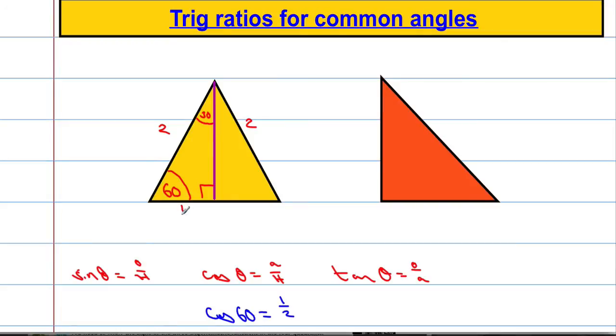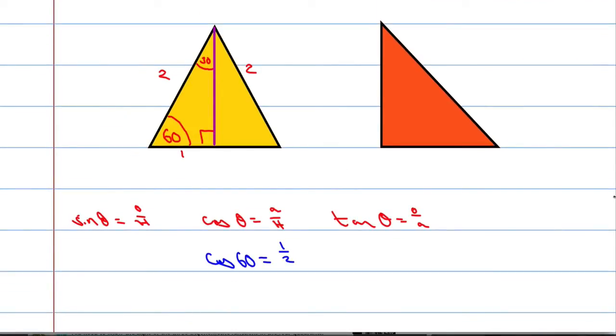I can also write down actually the length of this purple line here by using Pythagoras' theorem. This is the hypotenuse. This is one of the short sides. And using Pythagoras, let's work out the purple line. 2 squared will equal 1 squared plus the purple line. I'm going to call it x squared. 2 squared is 4 which means 4 equals 1 plus x squared. Taking 1 off both sides we get 3 equals x squared which means that x equals the square root of 3. So this side here, this purple side is actually the square root of 3 in length.